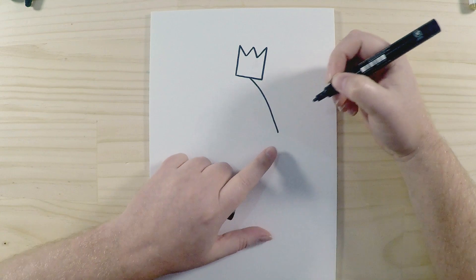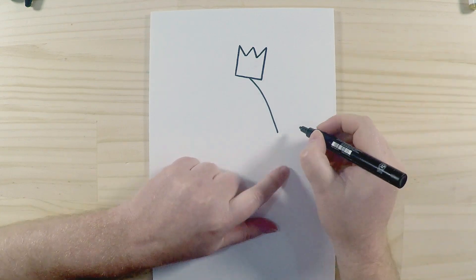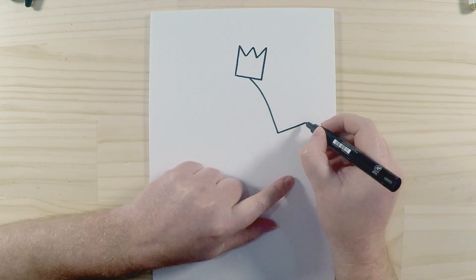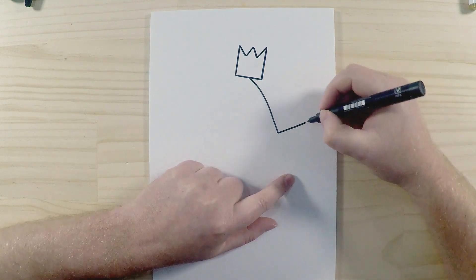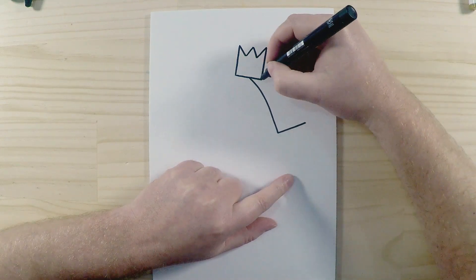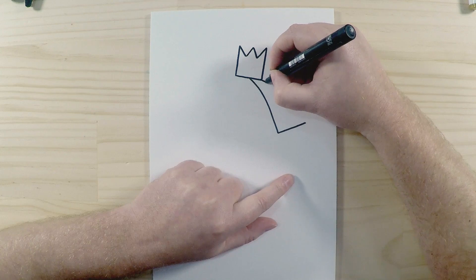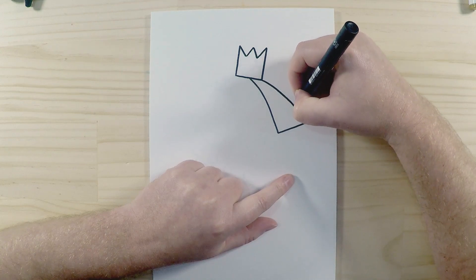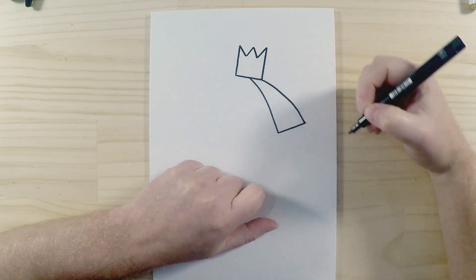Then we'll draw another line going out and just stop it there. Then all we do is draw it in this point here to the corner of the crown, nice curve around like that, close off that shape.